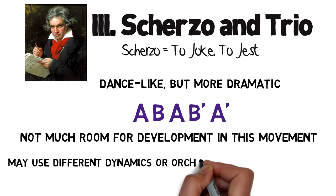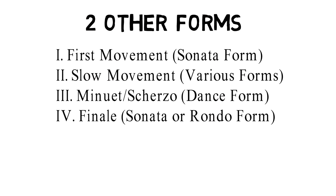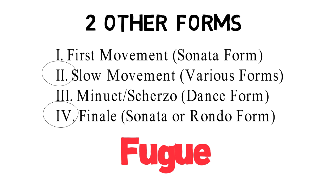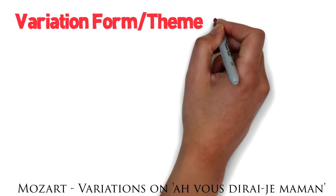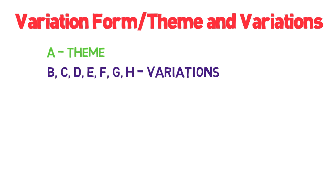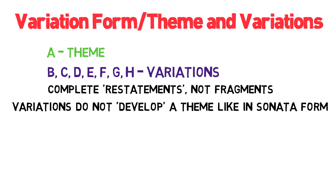Finally there are two other forms which might appear in a sonata, either in the position of the slow movement or the finale, and these are radically different from any of the others we've looked at. The first is the fugue, which is very rare in a sonata but incredibly important in the history of music — I'll give the fugue its own separate video. The second is much more common: variation form, sometimes called theme and variations. You'll be given a theme and then a set of variations on that theme, and these variations will be in the guise of complete restatements of the theme rather than the fragmented kind of development we find in other forms. In typical developmental forms like sonata form, we learn to recognize a theme by its melody so we can easily hear when it's being fragmented and developed.